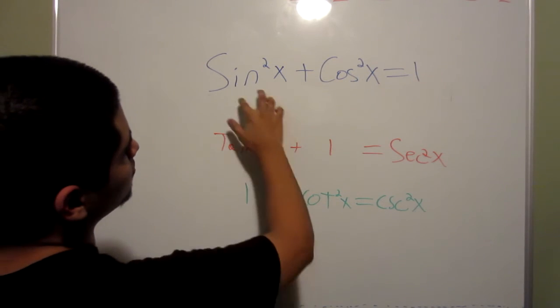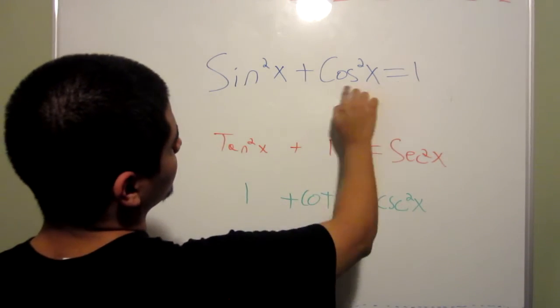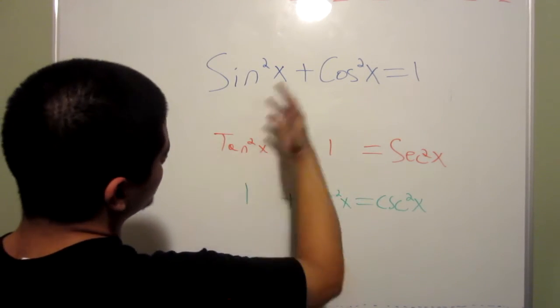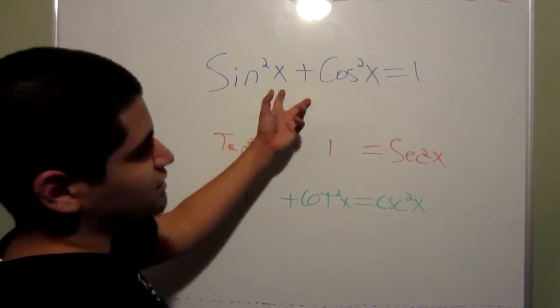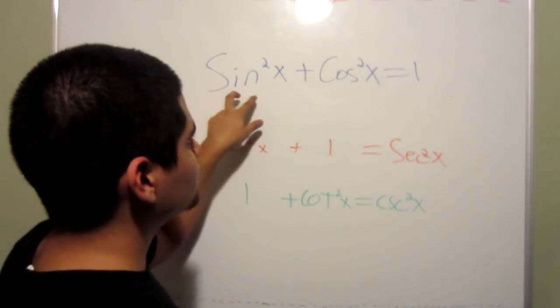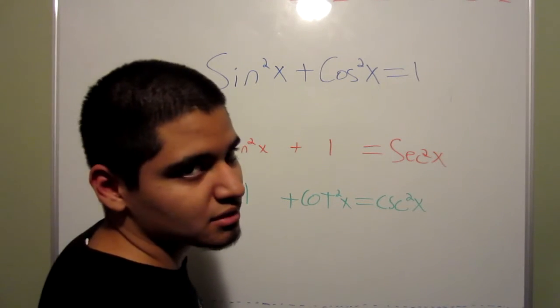Like make sine squared x equal 1 minus cosine squared x, or anything of the sort for all three. But, if you know this, and know that you have to divide by sine squared x and cosine squared x to get either of these two, you'll be fine in memorizing these.